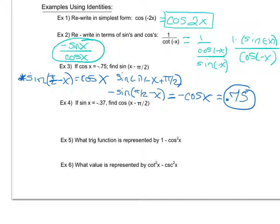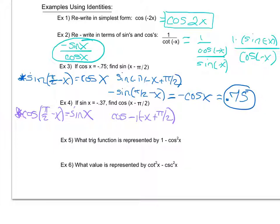Example 4 is very similar to example 3. I notice I don't have a formula for cosine of x minus pi over 2, but I do have cosine of pi over 2 minus x, which equals sine of x. Again the arguments are exact opposites, so I factor out a negative 1, giving negative x plus pi over 2. Since cosine is an even function, cosine of a negative equals cosine of a positive — the negative disappears — and I'm left with cosine of pi over 2 minus x, which equals sine of x, which according to the given information equals negative 0.37.